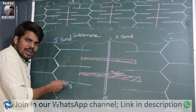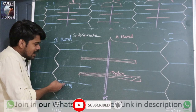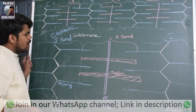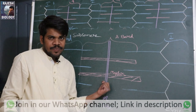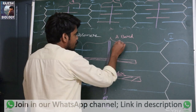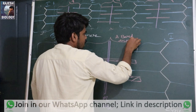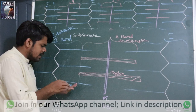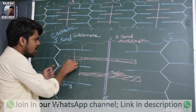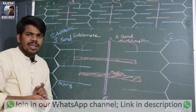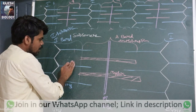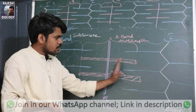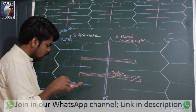Thin filaments allow the light — that's why the actin region is called the isotropic band (I-band). The A-band cannot allow light through it — that's why it is called the anisotropic band. To summarize: whichever band allows light through it is the I-band; whichever does not allow light through it is the A-band.